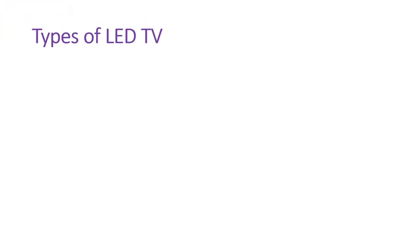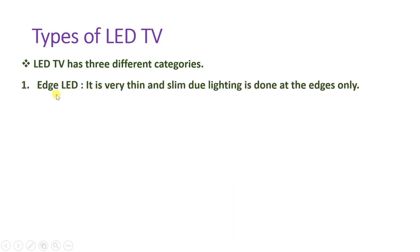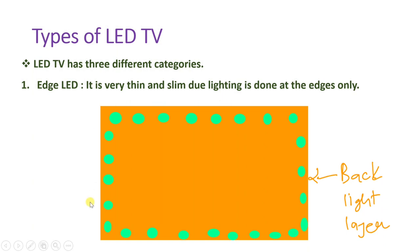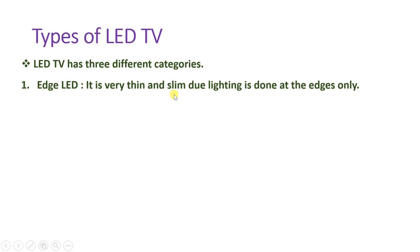LED television has three different categories. The first is Edge LED television. These are very thin and slim because the lighting is done at the edges only. In the back layer of the television, the light source is placed only on the edges, so because the LEDs are on the edges, the display is very thin and slim.